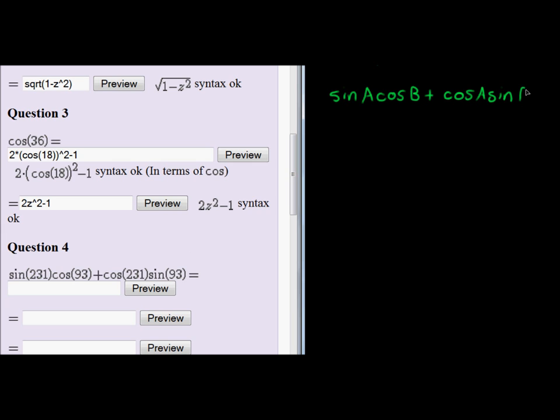Here we go. And if you know your formulas, you will immediately recognize that this is the compound angle formula. In other words, it can also be written as sin(A + B). Which means, in our case, that would mean that we actually have sin(231 + 93).